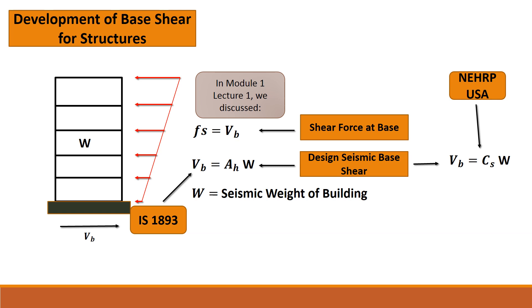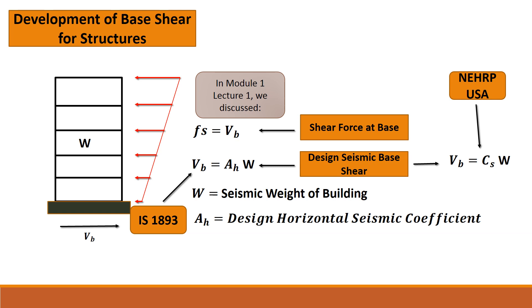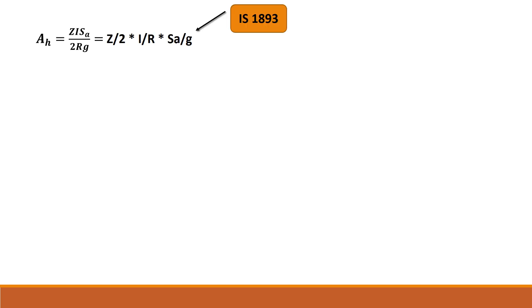IS 1893 takes this value as Vb equal to Ah times W. The US code takes the value of Vb equal to Cs times W, where W is the seismic weight of the building and Ah is the design horizontal seismic coefficient. The design seismic coefficient Ah is given by IS 1893 as: Ah = (Z/2) × (I/R) × (SA/g).